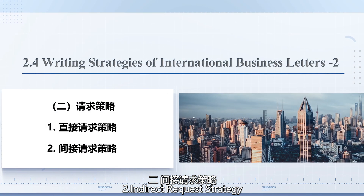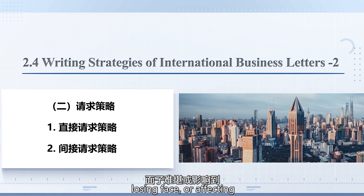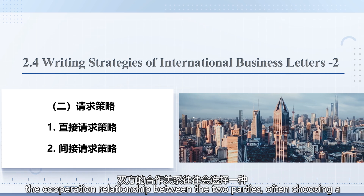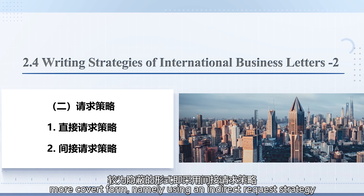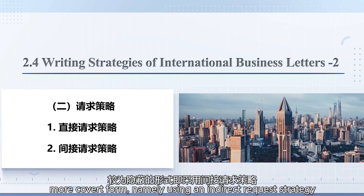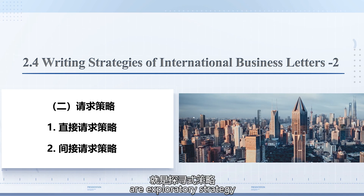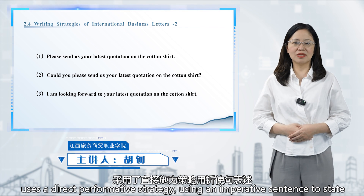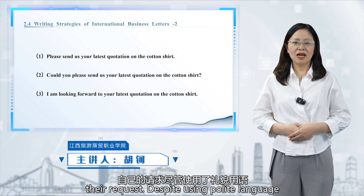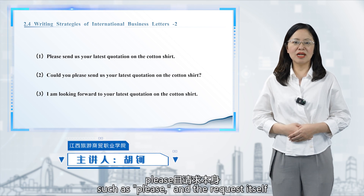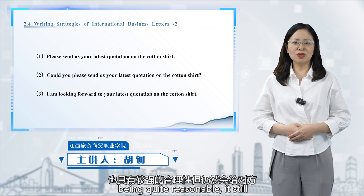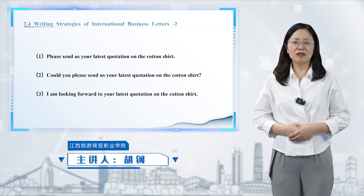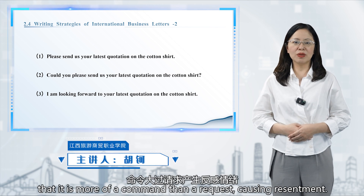Indirect Request Strategy. Sometimes the writer fears being refused, losing trust, or affecting the cooperation relationship between the two parties, often choosing a more covert form — namely using an indirect request strategy to achieve the purpose. The most common are exploratory strategy and suggestive strategy. Please compare these three sentences. The first sentence uses a direct performative strategy, using an imperative sentence to state the request. Despite using polite language such as 'please,' and the request itself being quite reasonable, it still creates a sense of coercion for the other party, especially with new customers, making them feel it is more of a command than a request, causing resentment.